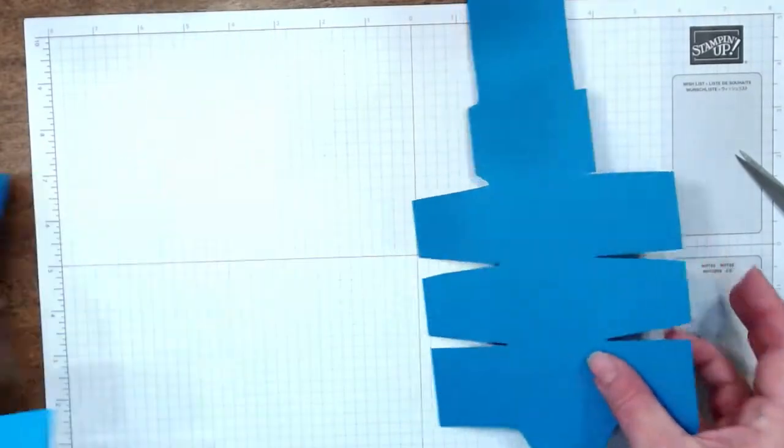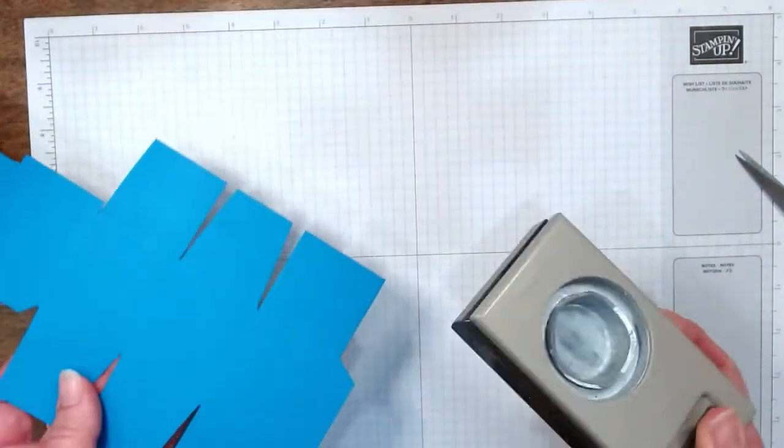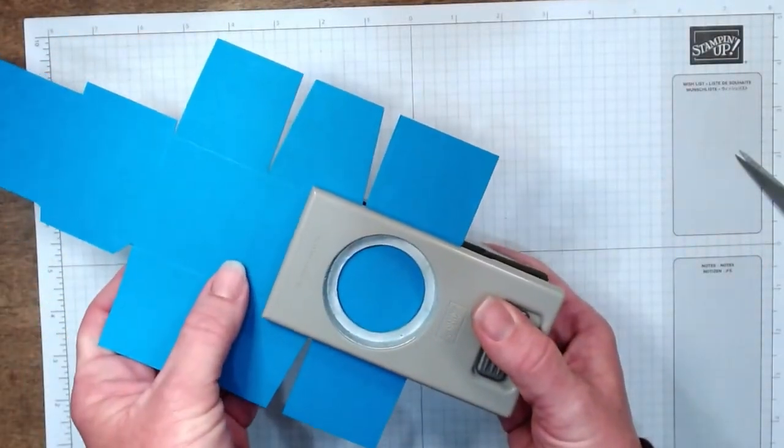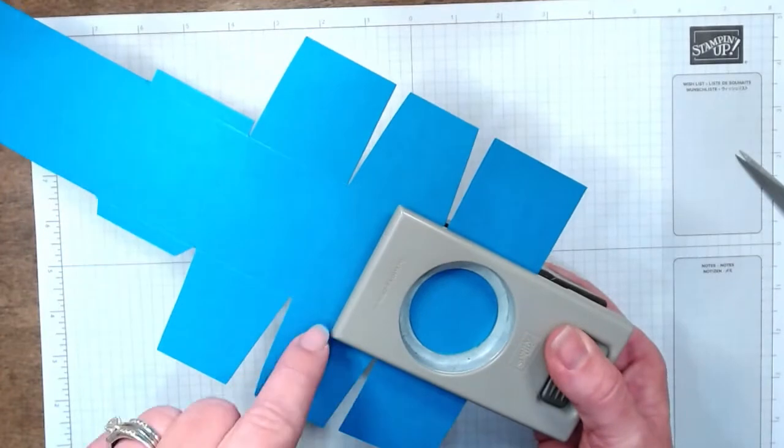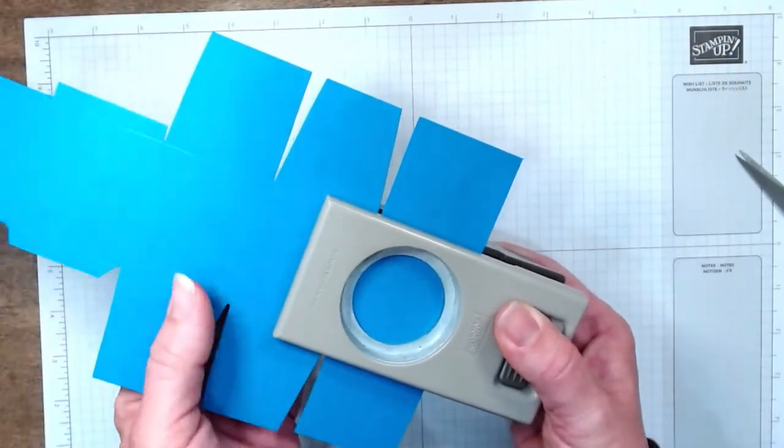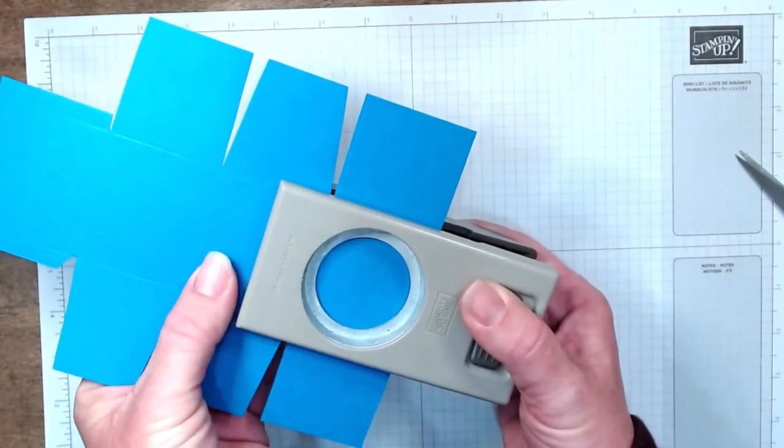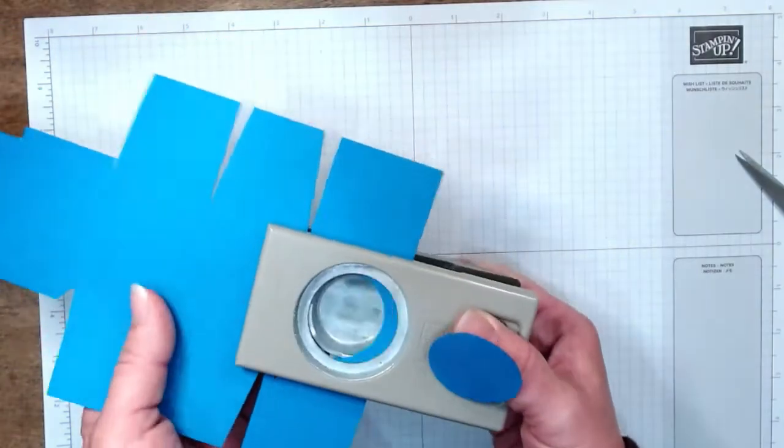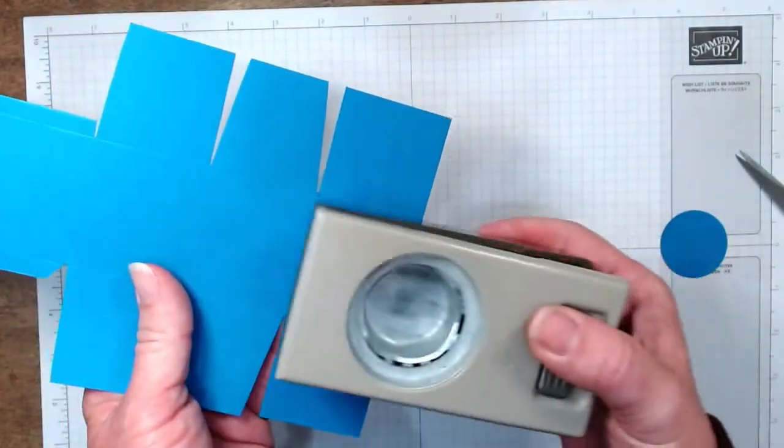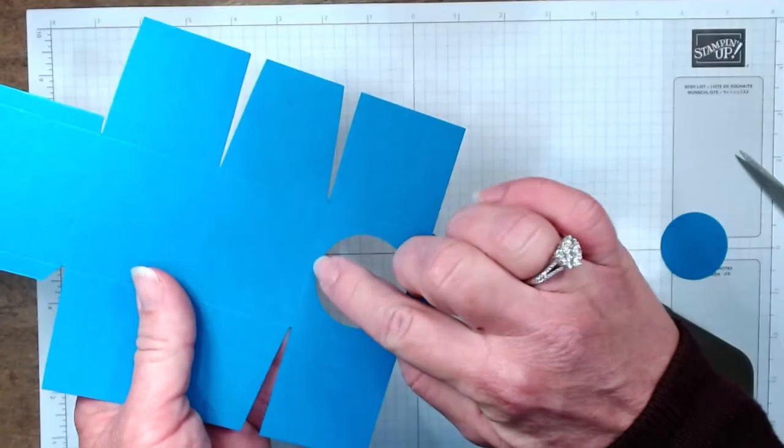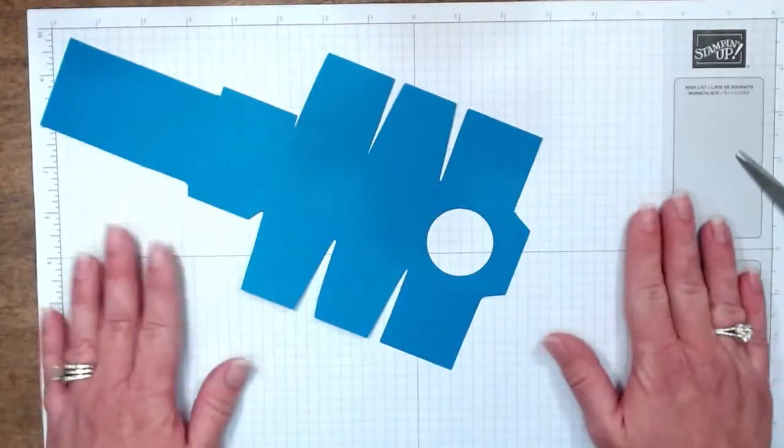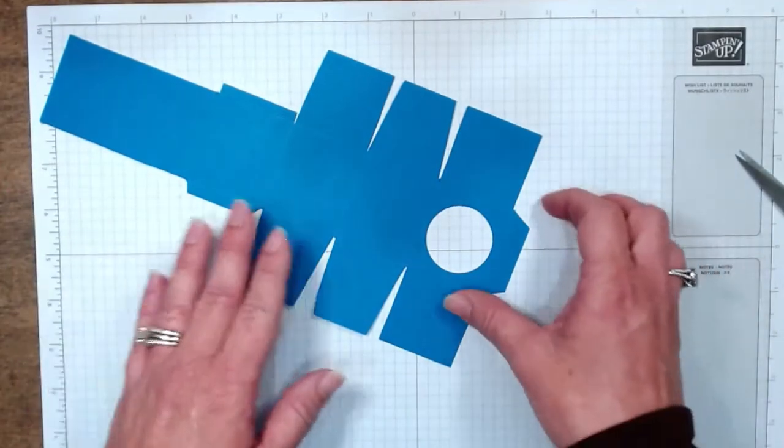So I recommend if you guys are going to do this, do this on some scrap paper. Do it four or five or six times, and then once you have it down perfect, you can use our cardstock. So take your one and a half inch circle punch. You're going to slide it all the way in to the center. You want to line up the score marks, pull it down just a hair, and then punch.